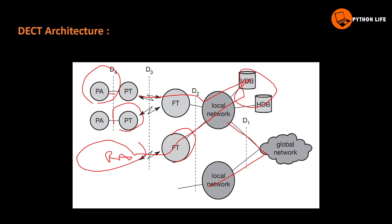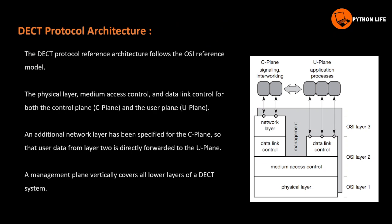If you use a global network, you can connect multiple local networks. If you use a local network, you can use local resources. This is the DECT architecture. FT is the Fixed Radio Terminator and PT is the Portable Radio Terminator.